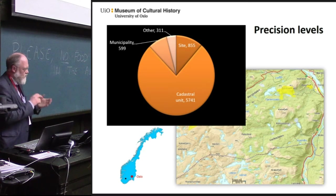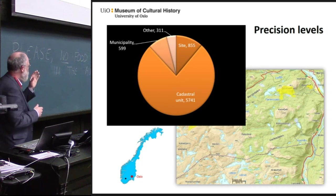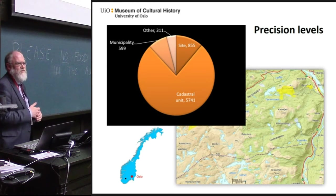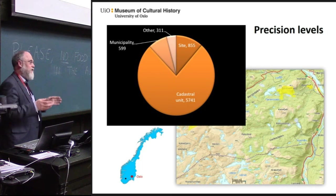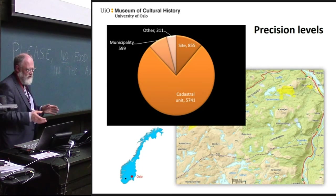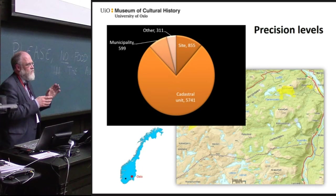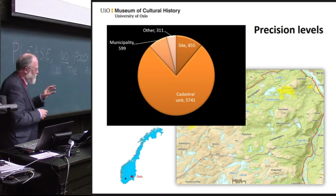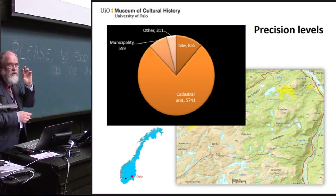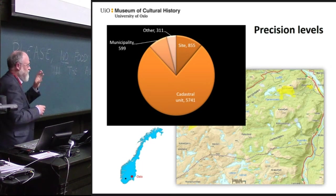We have precise site information for some objects, and for some we have even less precise information. This is because finds have come to the museum since it started in 1829, and the early finds very often have only the cadastral unit. Some finds, especially those coming through other collections, have even less information. When we geotagged the artifacts, we had to decide how to present all this on a map without being imprecise or giving a picture that is wrong.